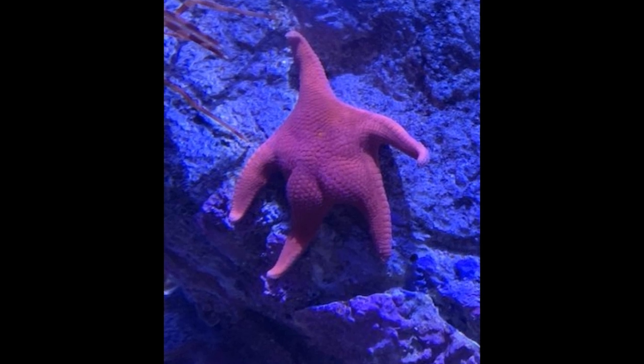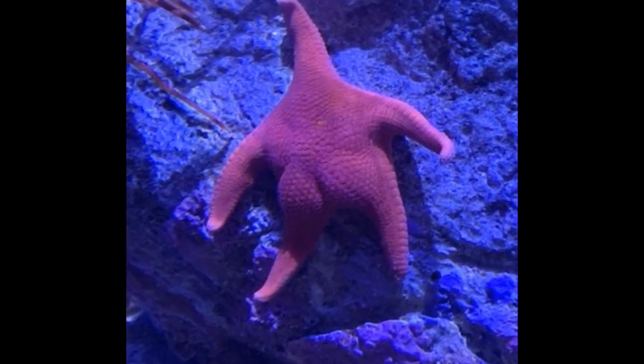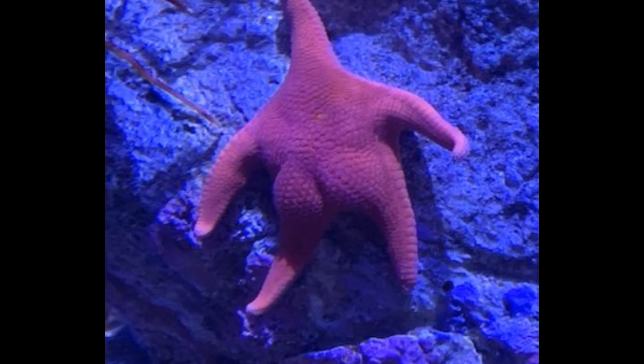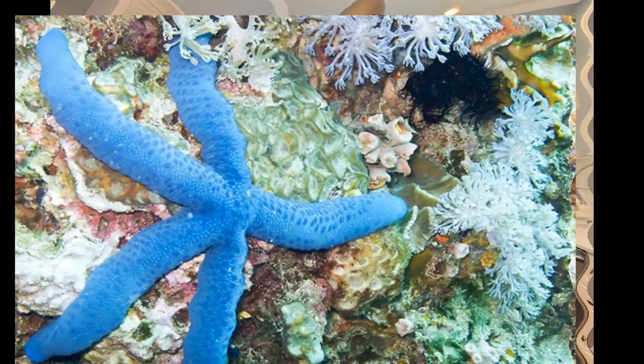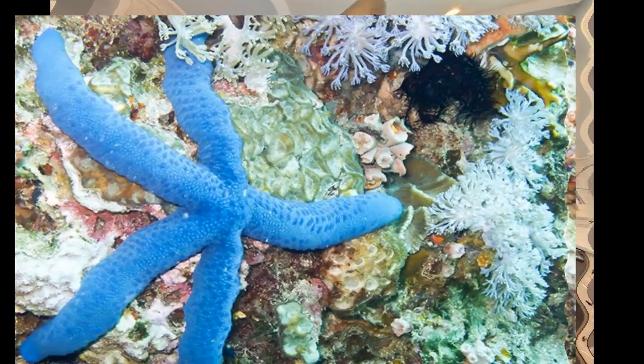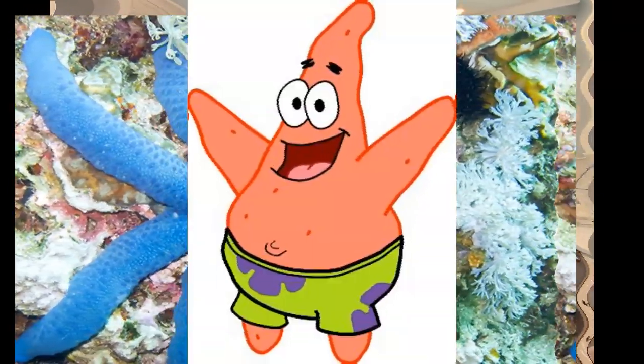Starfish are marine invertebrates. They typically have a central disc and five arms, though some species have a larger number of arms. The aboral or upper surface may be smooth, granular, or spiny, and is covered with overlapping plates. Many species are brightly colored in various shades of red or orange, while others are blue, gray, or brown.